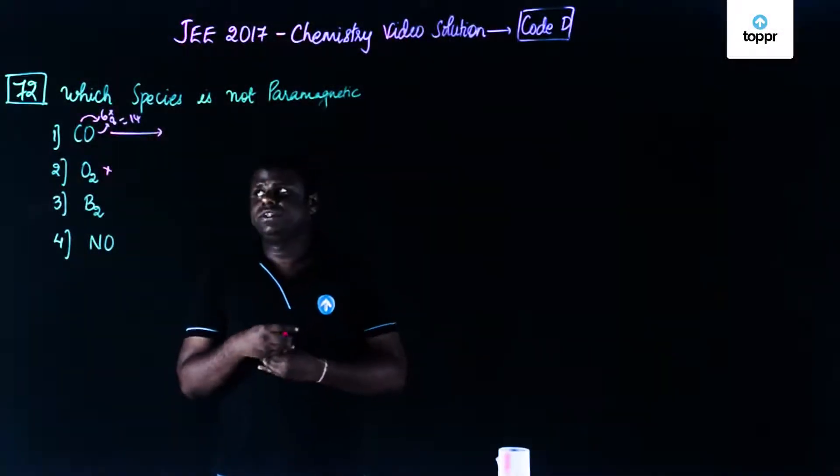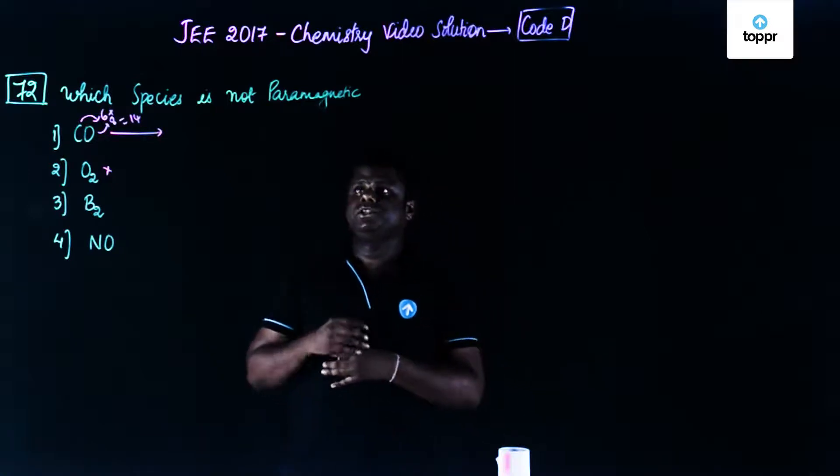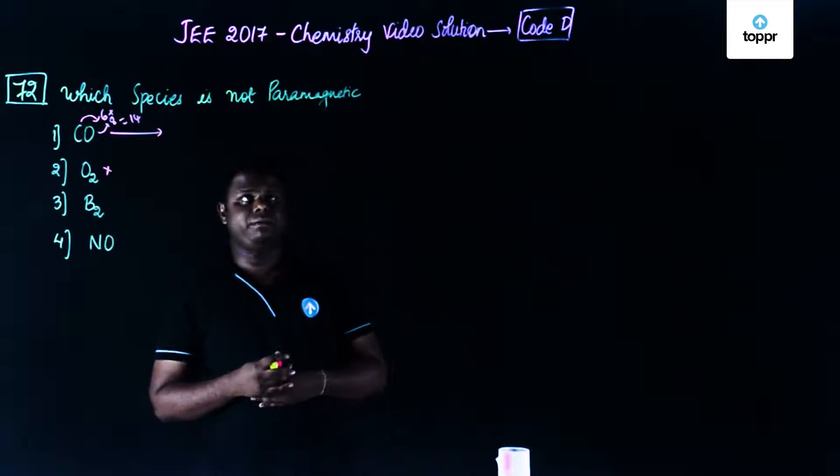Now, let's move on to the next question which is question number 72 from the section on chemical bonding, especially the molecular orbital theory.